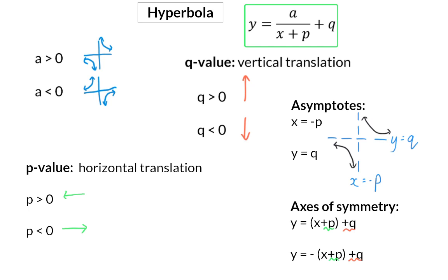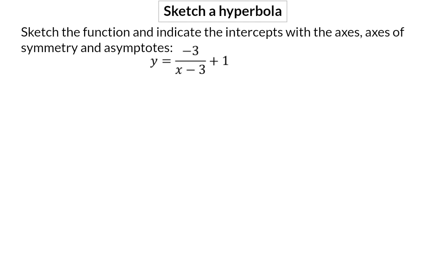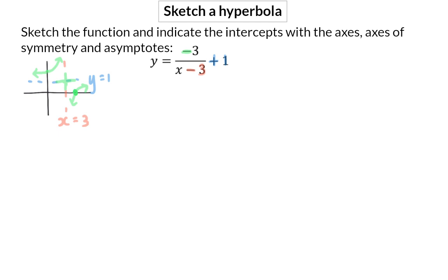Let's now sketch a hyperbola. We need to indicate the intercepts with the axes, axes of symmetry, and asymptotes. I start by thinking about a rough sketch, looking at the two asymptotes. The q value of plus 1 gives the horizontal asymptote at y equals 1. The p value of minus 3 gives the vertical asymptote — and remember, the opposite happens to what you'd expect, so this asymptote is at x equals 3. The a value is negative, which tells me the graph will be in the second and fourth quadrant relative to the crossing of the two asymptotes. Because the graph has translated, there will be both an x-intercept and a y-intercept to determine.